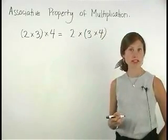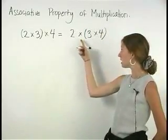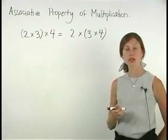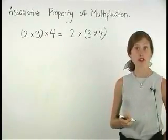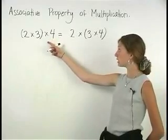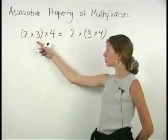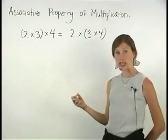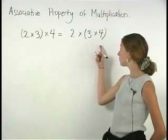Notice that the factors are the same on both sides of the equal sign: 2 times 3 times 4. However, on the left side of the equal sign we've grouped together 2 times 3, and on the right side we've grouped together 3 times 4.